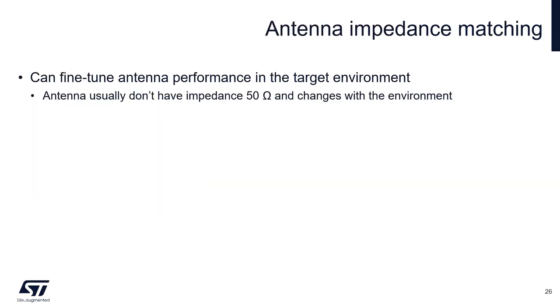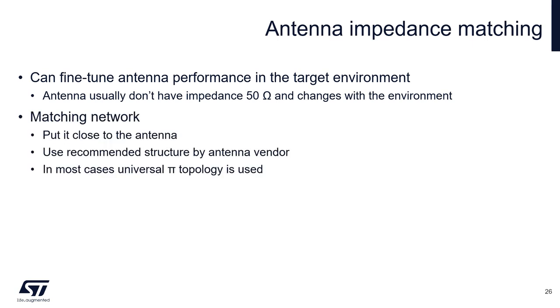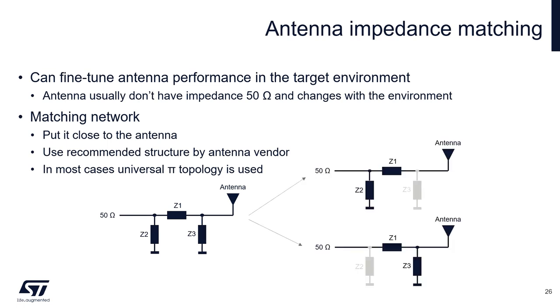As we mentioned earlier, an antenna usually doesn't have impedance 50 ohms and the impedance changes with the environment. The matching network can help to tune the impedance close to 50 ohms. The antenna matching network is usually placed close to the antenna. If the antenna vendor recommends some matching network structure, use it. If you are not sure which antenna matching network will be needed, you can place this universal pi topology on the PCB. In the design usually one half will be populated depending on the impedance of the antenna.